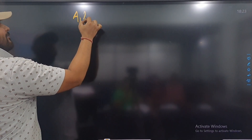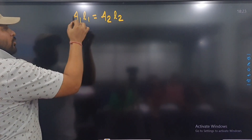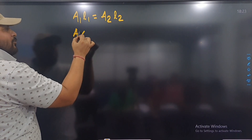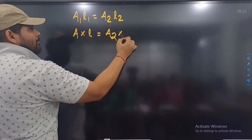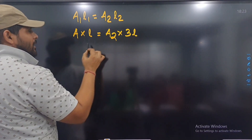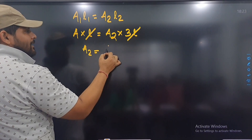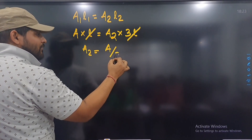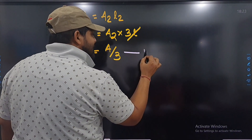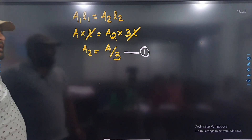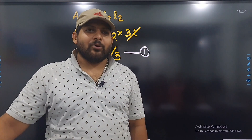A1 into L1 must be equal to A2 into L2। A को A मानते हैं, length उस time पे L है। A2 मुझे नहीं पता, पर L2 क्या हो गया — 3L हो गया। तो L से L cancel हो जाएगा और A2 निकलेगा A by 3। इसलिए A by 3 हो गया — ऐसे लिखके बताना होगा।